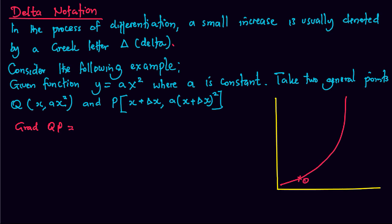Assume this is point Q with coordinates x, ax squared, and point P with coordinates x plus a small change in x, a times x plus small change in x squared as coordinates of P.